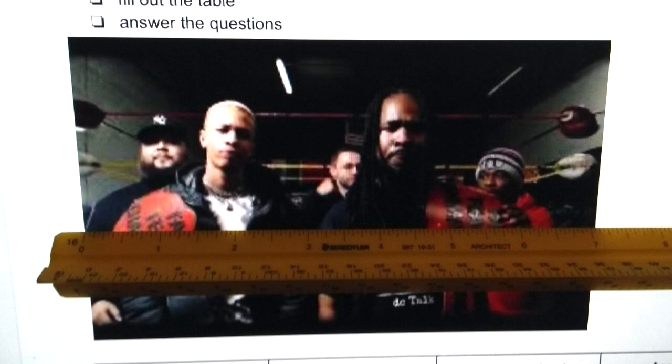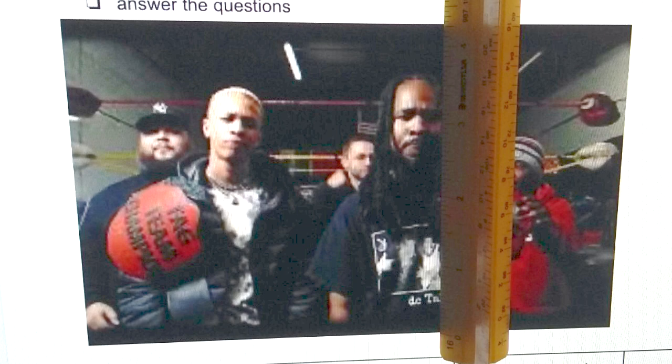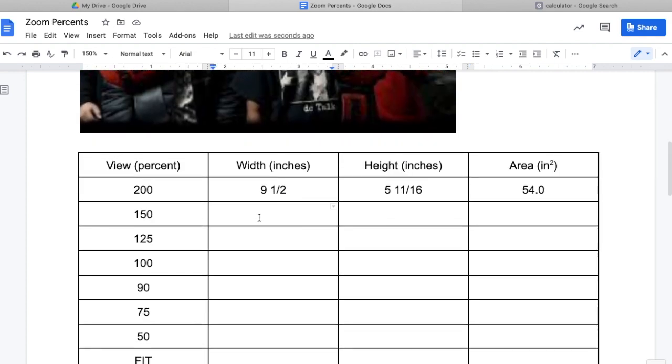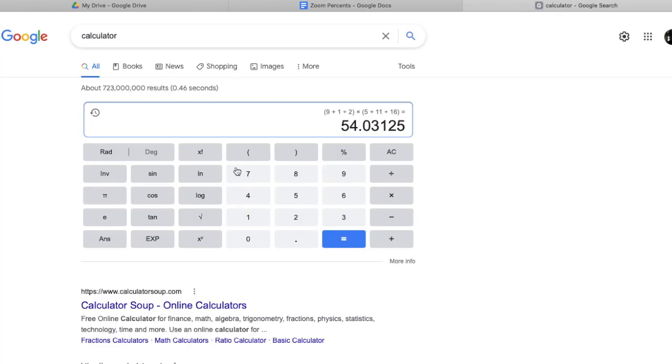I'm gonna measure the picture again. Looks like we're getting seven and one-eighth, four and five-sixteenths. Put those numbers in here: seven and an eighth, four and five-sixteenths. Do my multiplication: seven and one-eighth times four and five-sixteenths - 30.7.